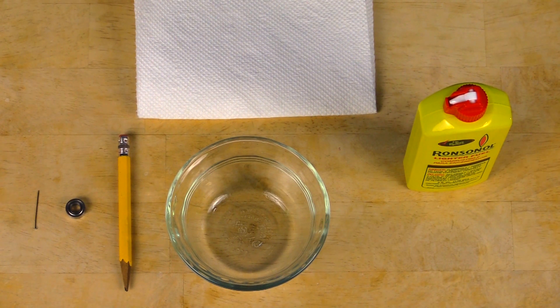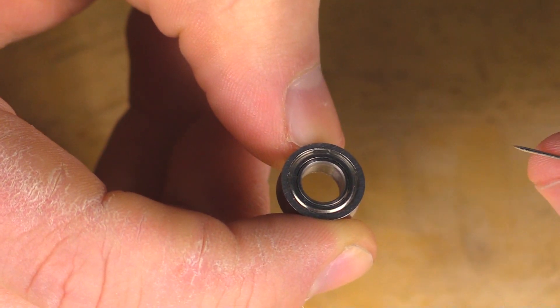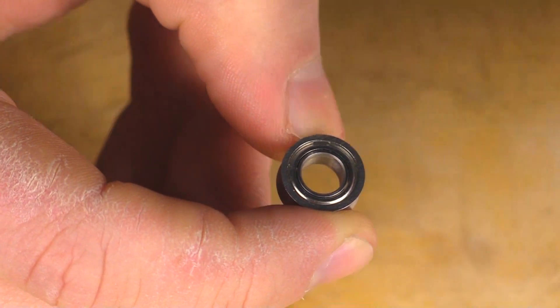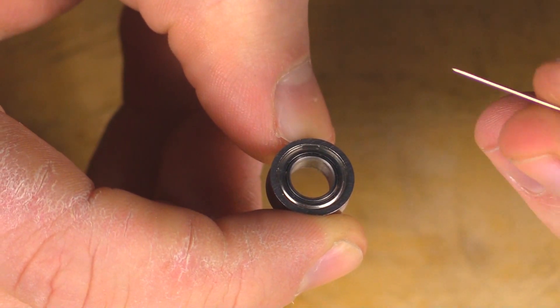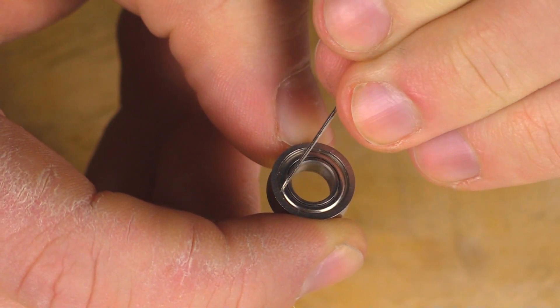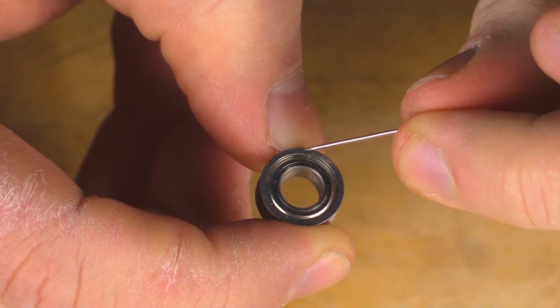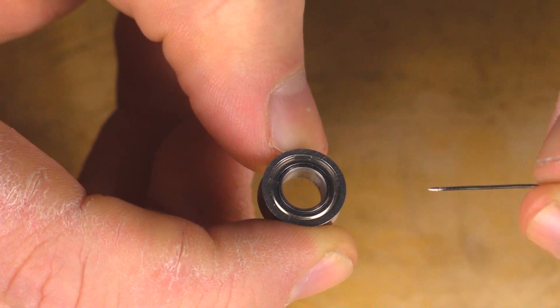So the first thing that you want to do is remove the shields off your bearing as this helps get the good stuff in and the bad stuff out. So to remove the bearing shields you're going to need your pin and the bearing. You want to look around the inner edge of the outer race of the bearing until you find this little gap and that right there is the hole in the c-clip which is where you remove it.